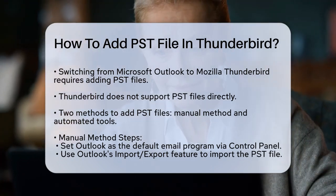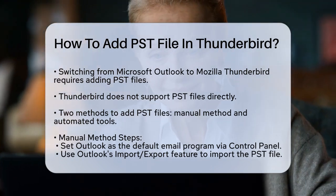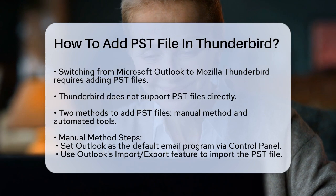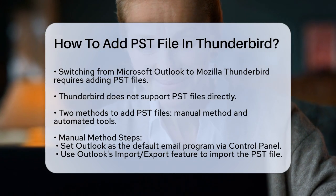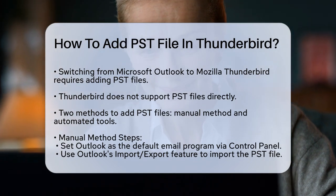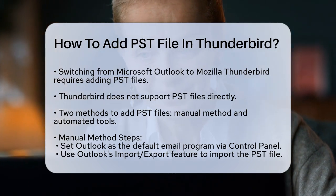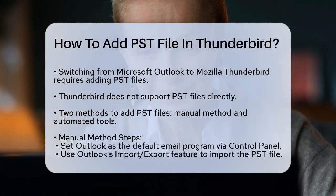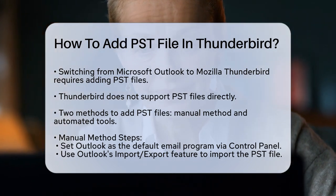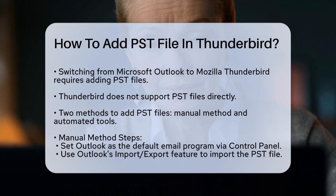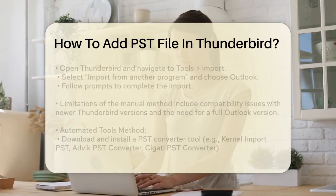Go to your Control Panel, navigate to Programs, and set Outlook as your default email program. Then open Outlook and use the Import-Export feature to import your PST file into Outlook.